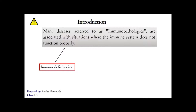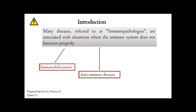These immunodeficiencies expose the individual to a greater risk of infection. In other cases, the immune system is itself a cause of the disease — it can attack the components of the body that it is supposed to protect and cause tissue damage. This is the case of autoimmune diseases, the second type of immune pathology.